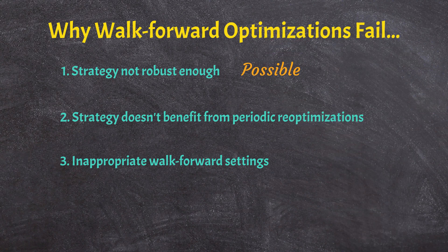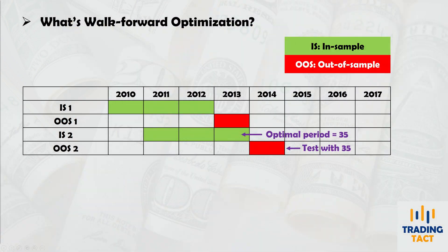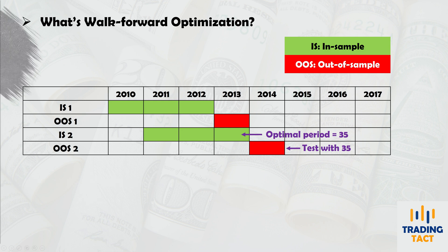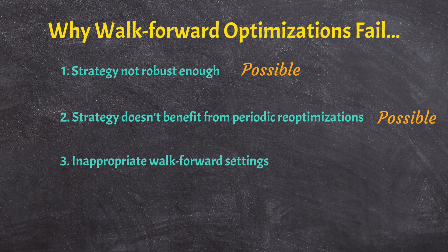An alternative explanation is that the strategy doesn't benefit from periodic re-optimizations. Some opponents of walk-forward optimization argue that re-optimizations are akin to chasing the market — by the time the optimal parameter set is applied, the market may have already shifted and the new parameters are always one step behind. This is a complicated issue and I don't know of any concrete method that determines whether a strategy should trade with either static or periodically re-optimized parameters. The last reason is that the walk-forward settings applied simply do not suit the strategy.